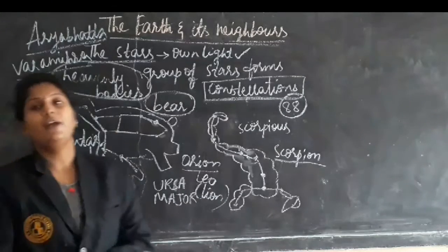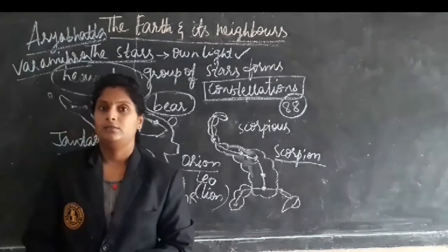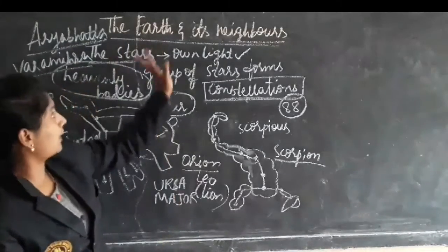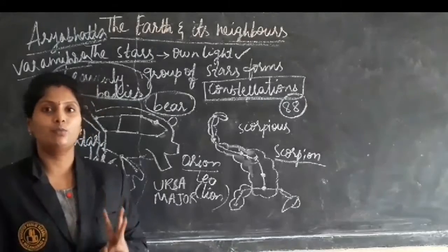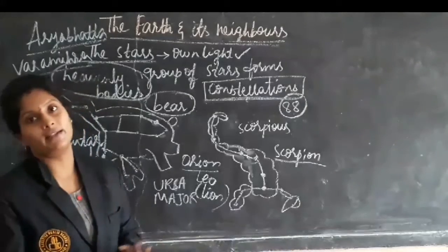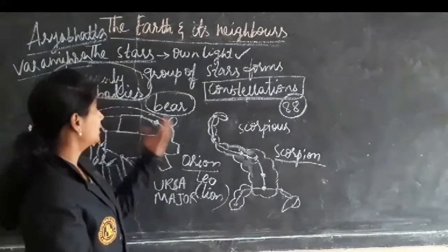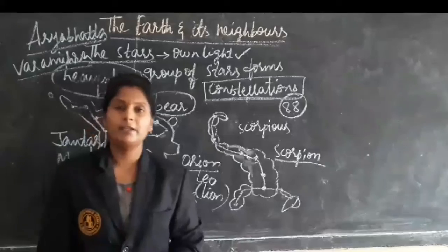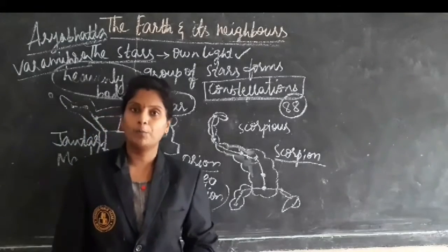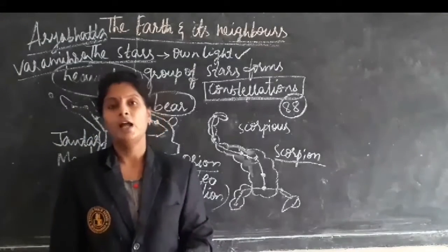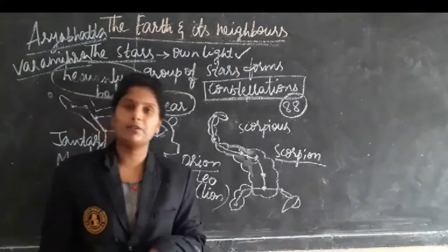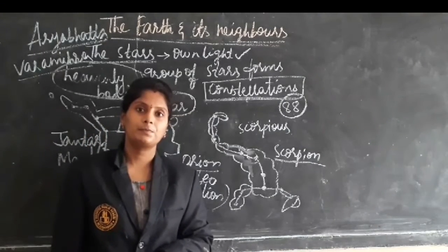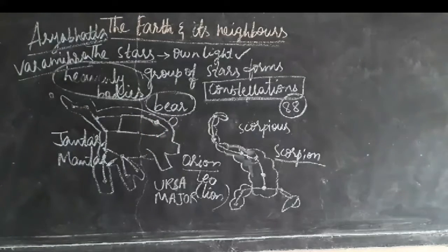So in this way, we concluded about the earth and its neighbours — the earth, stars, moon, and planets. We have discussed all of these. Now I will be giving a small worksheet. I hope you will do it, and I am uploading the pictures so that you can understand the concept very easily. Thank you.